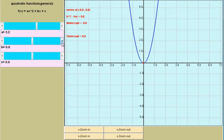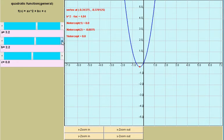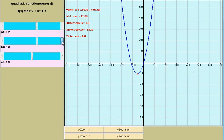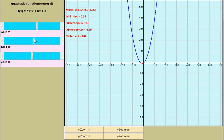Now, if we change b what we notice is the shape is the same however it is shifting or translating up and down and left and right as you can see here.